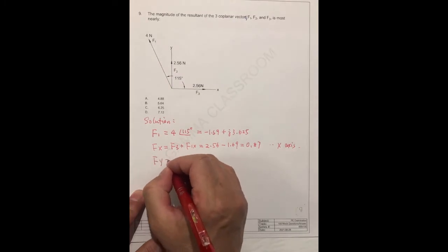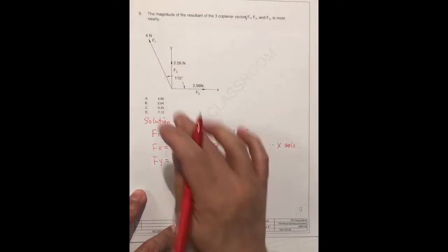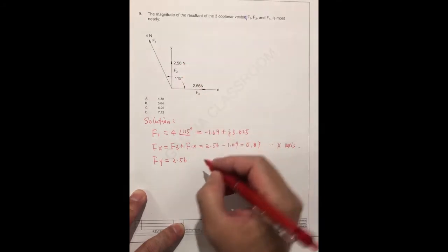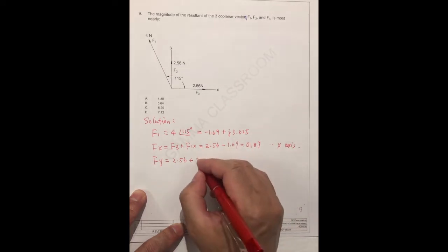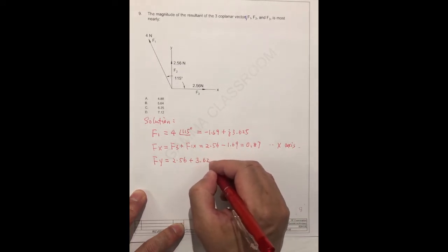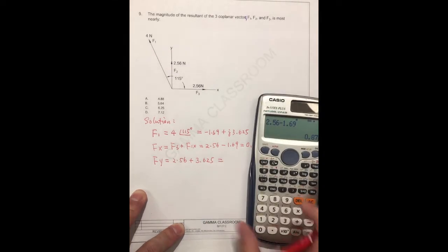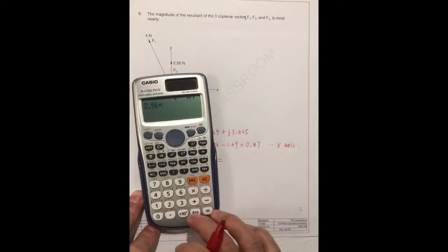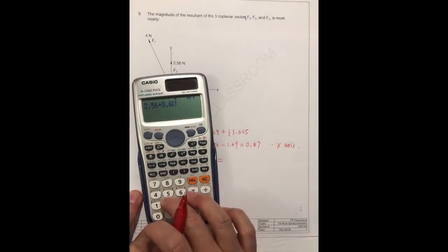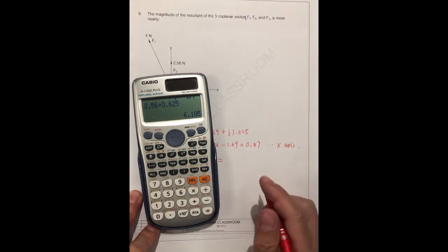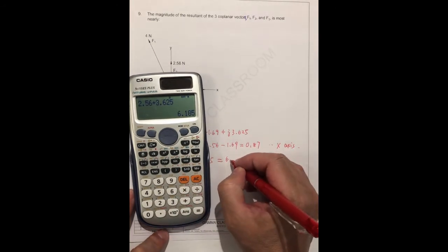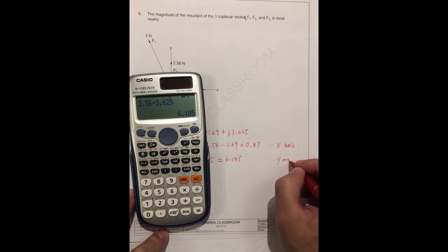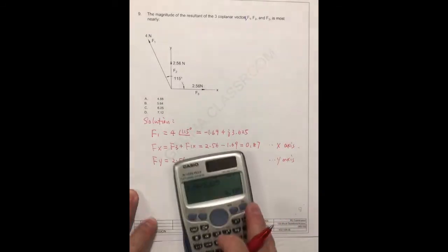Fy, because it's the same direction, this is F2 plus this 3.625. 2.56 plus 3.625 equal to 6.185. This is Y.